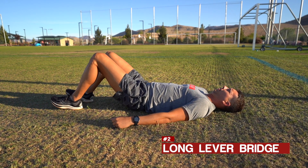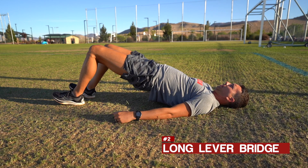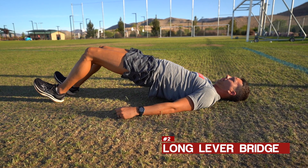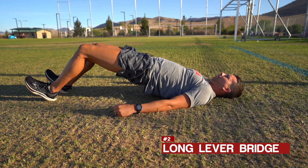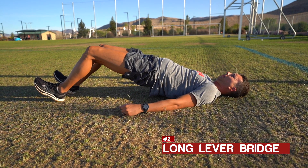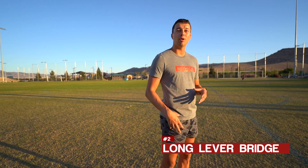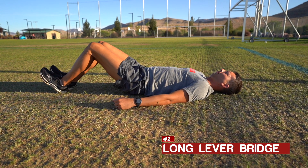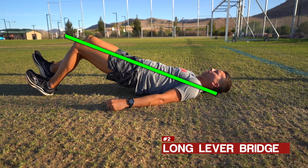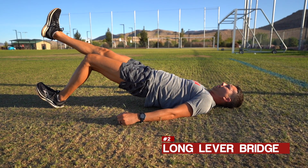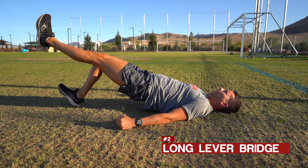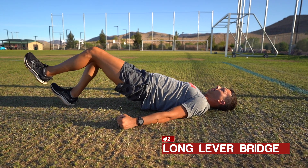Exercise number two is the long lever bridge, which works both the hamstrings and adductor muscles to improve running mechanics. Start in a regular glute bridge position, then step the feet farther out from your hips to increase activation of the adductors and hamstrings — making it more specific to the push-off and landing angle in running. Keep shoulders, hips, and knees in a straight line. Progress to single leg, alternating 10 seconds left and right. Target: 60 seconds, three sets.